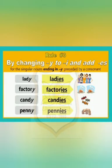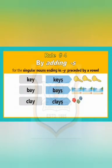Rule number 3: by changing Y to I and adding ES. For example, L-A-D-Y, lady — we replace Y with I-E-S to get L-A-D-I-E-S, ladies. If there is a consonant before Y, we remove Y and add I-E-S. But if there is a vowel before Y, we just add S. Children, consonants are the 21 remaining letters after the 5 vowels A, E, I, O, U from the 26 letters of the alphabet.